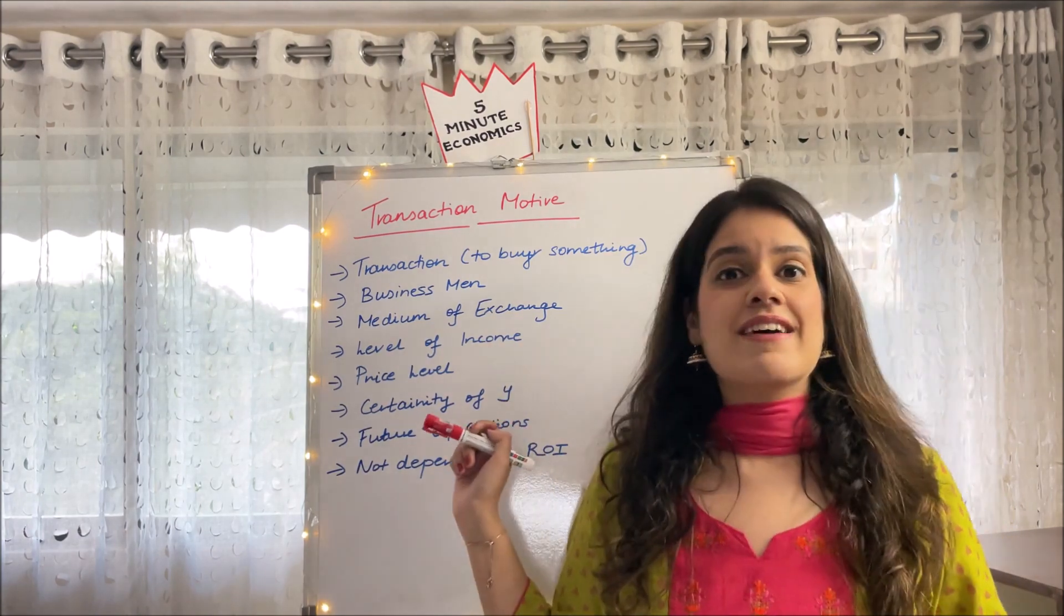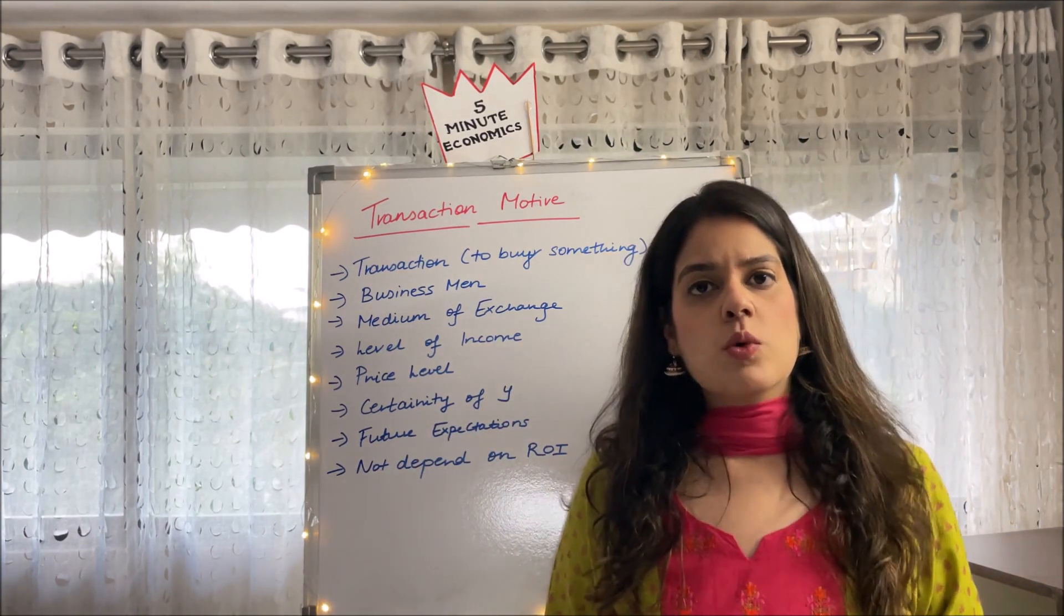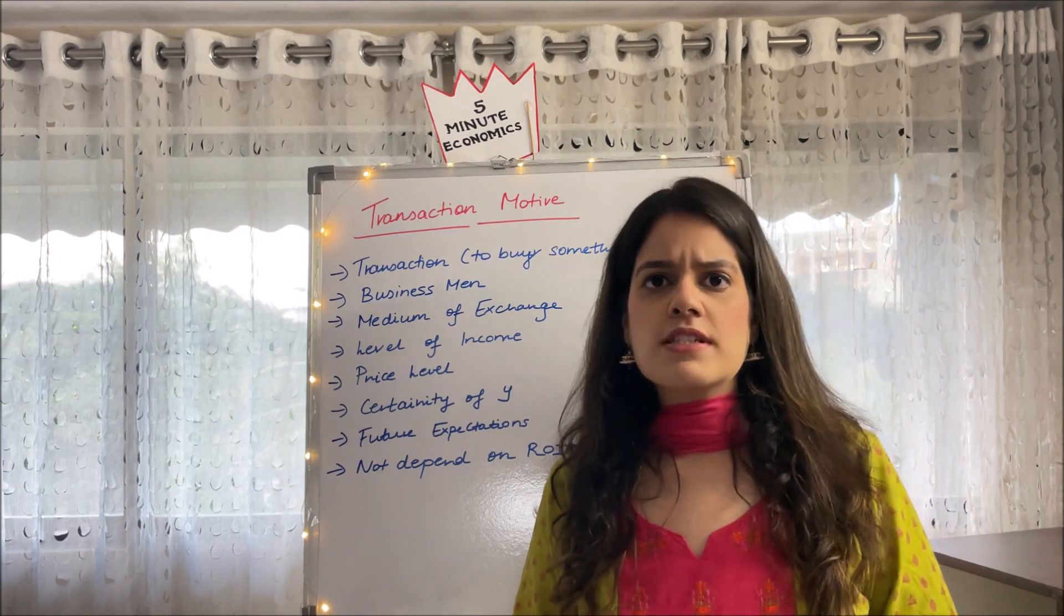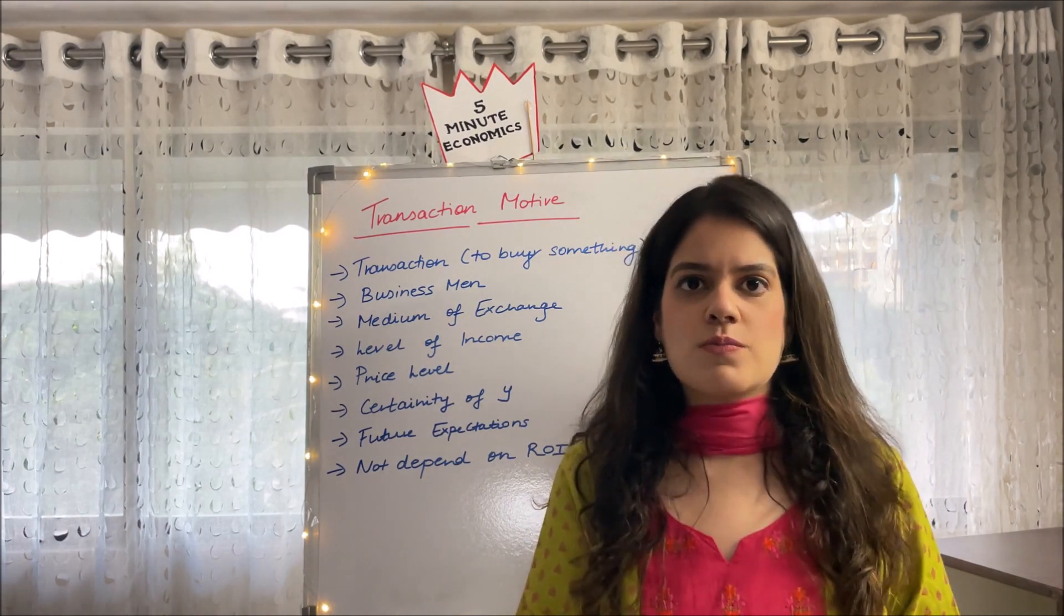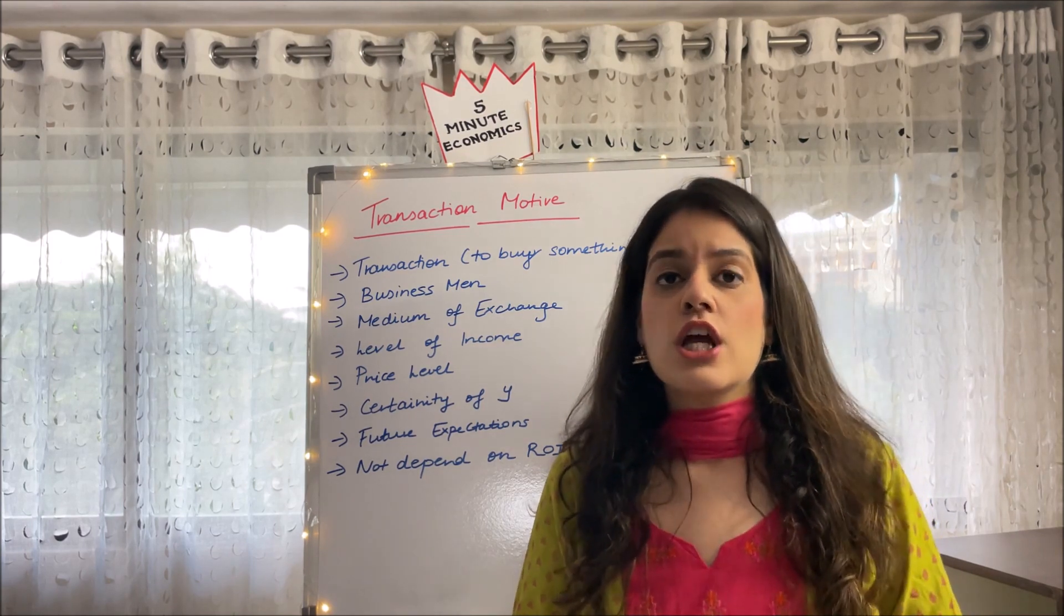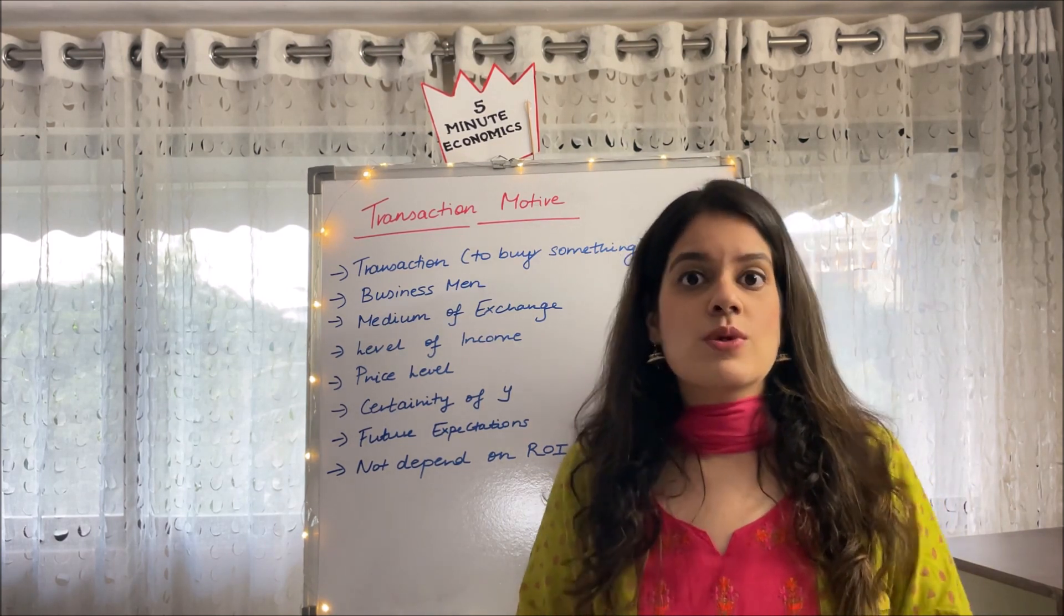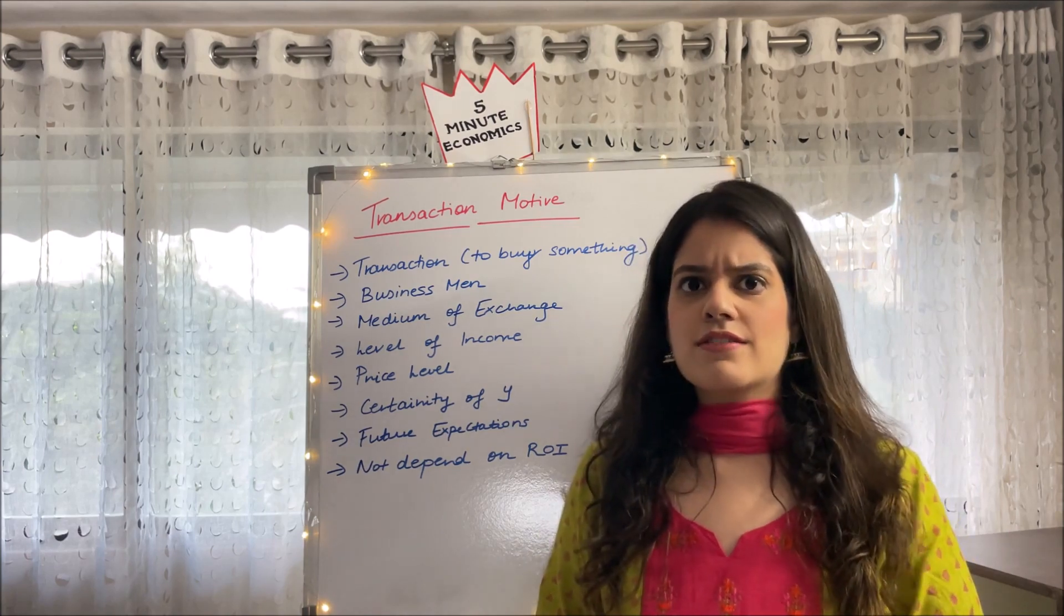Coming to the next point, which is level of income. Transaction motive highly depends on the level of income. A poor person will keep a very low amount of money because owing to his small income with him for transaction. Whereas a rich guy who is earning a lot of money will keep more money with himself to facilitate transactions.